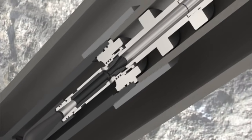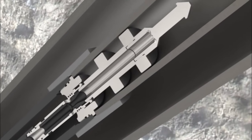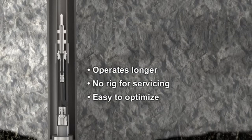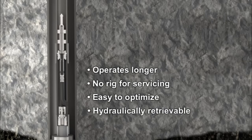With no moving parts, the JJ Tech downhole jet pump operates longer with reduced wear, surfacing and downtime. It needs no rig for surfacing, is easy to optimize and is retrieved to the surface by pumping in reverse.